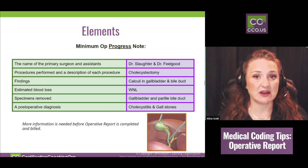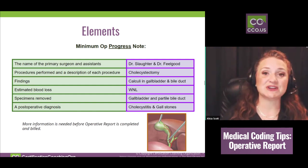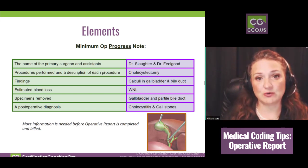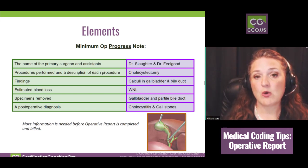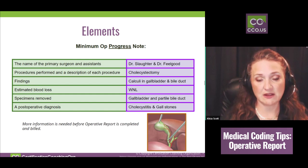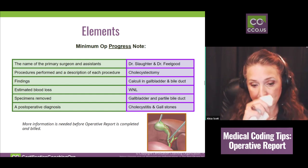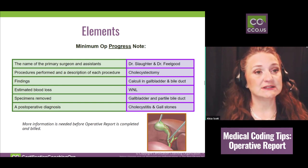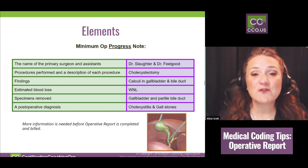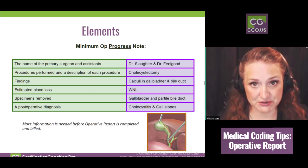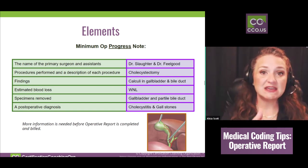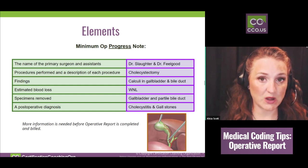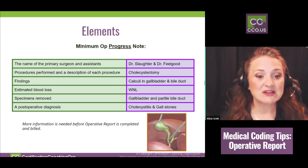Within the op report itself, the type of anesthesia and the anesthesia provider are listed, but the anesthesiologist will do their own separate anesthesia report, and that gets billed separately. You do not have to code anesthesia from the op report — it will be coded by the anesthesiology coder or separately for inpatient. So don't go looking for an anesthesia code on the op report.